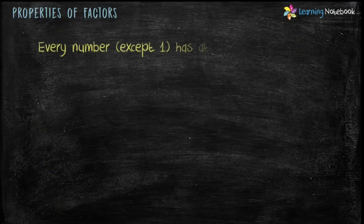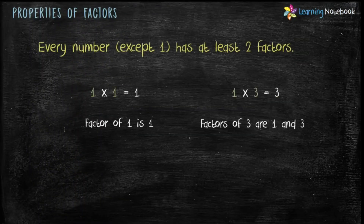The last property of factors is: every number except 1 has at least 2 factors. Because 1 has only 1 factor which is 1, and all other numbers have at least 2 factors. For example, number 3 has 2 factors: 1 and 3. So students, these were the 6 properties of factors.